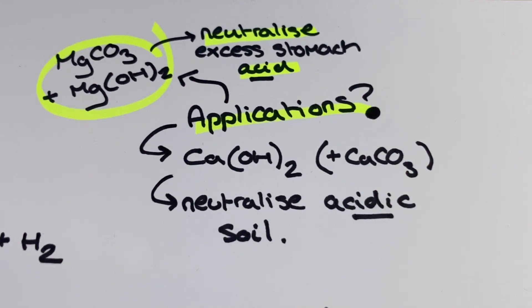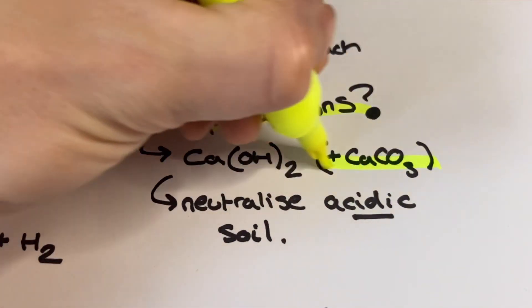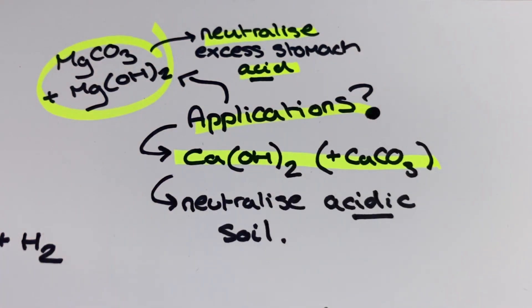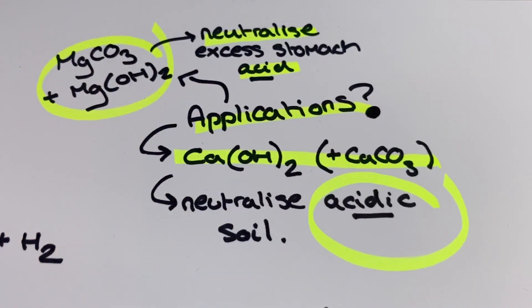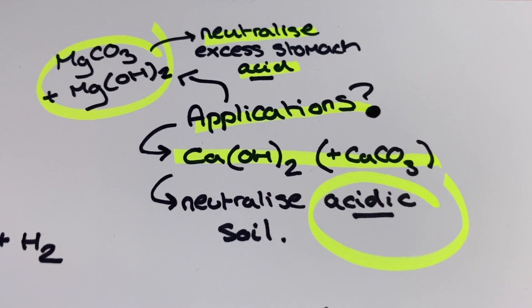Another example of the uses of the group 2 compounds as bases can be seen in calcium hydroxide or calcium carbonate, which can be used in agriculture to neutralize acidified or acidic soil. In your specification it doesn't actually mention the calcium carbonate, but it did come up on an OCR second year exam, so I've included that example here for you.